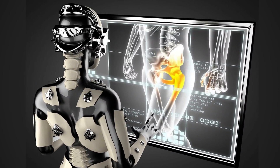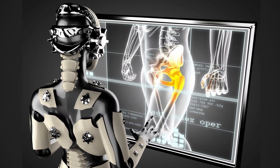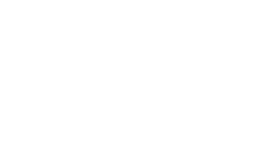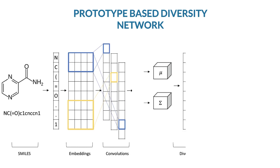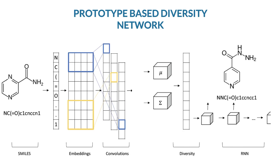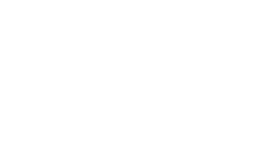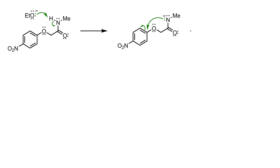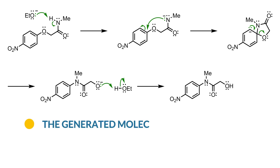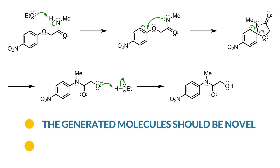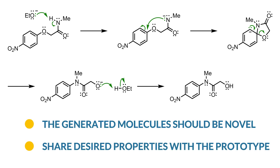Can we use machine learning and chemical data to design a similar process? We introduce the prototype-based diversity network, a conditional deep generative model for novel molecule generation with diversity attention. The model operates on a given molecule prototype and generates various molecules as candidates. The generated molecules should be novel and share desired properties with the prototype.